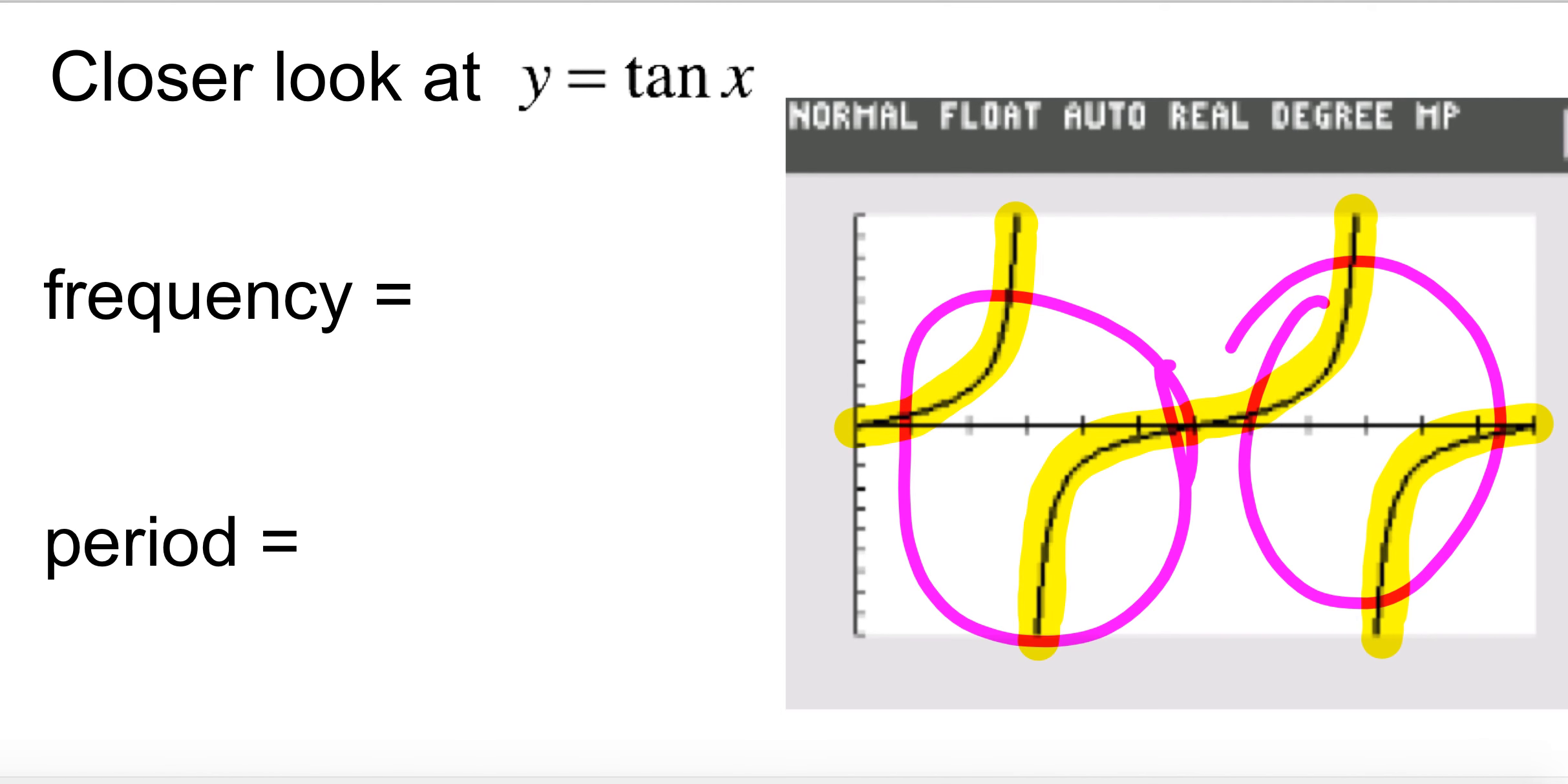Then, what is the period? Period is two pi over frequency. So, the period will be two pi over two, which is equal to pi. This makes so much sense because every pi, it will finish up one cycle.